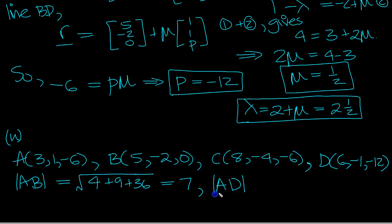AD, let's work that one out. AD is 3 and 6, the difference is 3 so that would be 9. 1 and minus 1 is the difference of 2 so that would be 4. And minus 6 to minus 12 is the difference of 6, that would be 36. 49, so it's 7. So side AB equals AD.